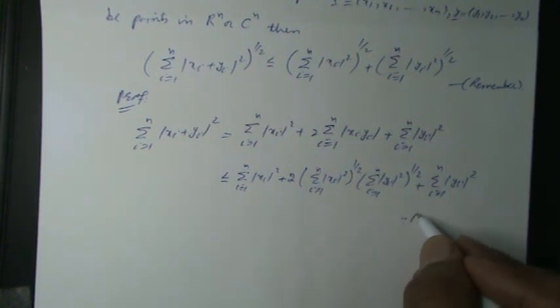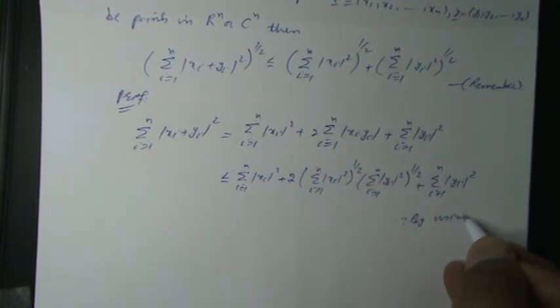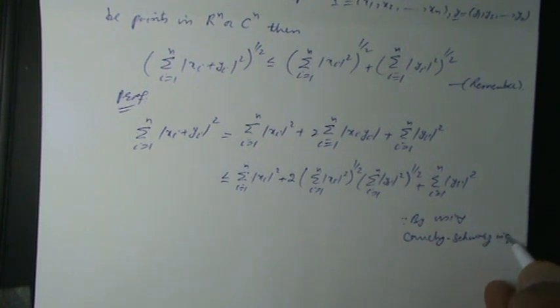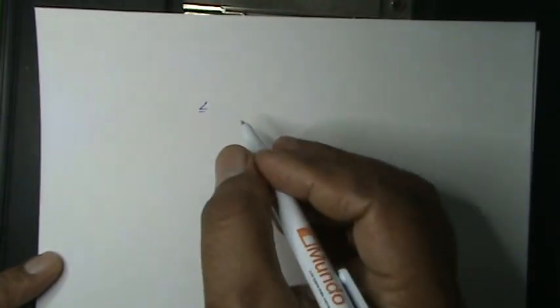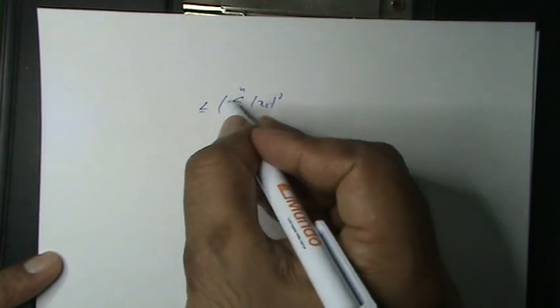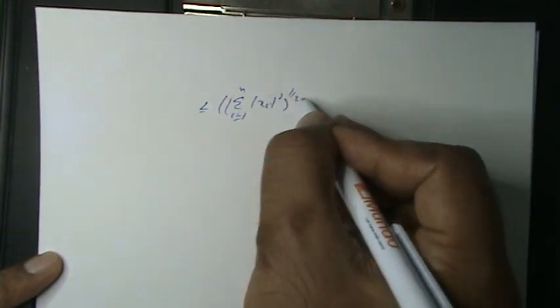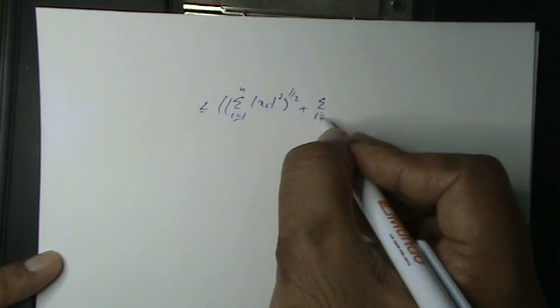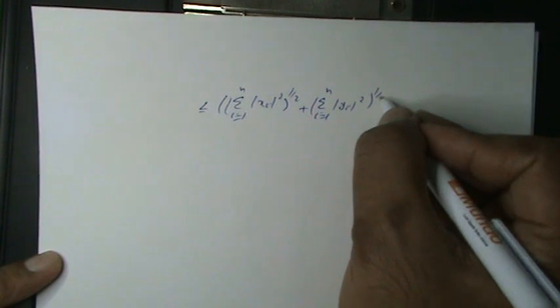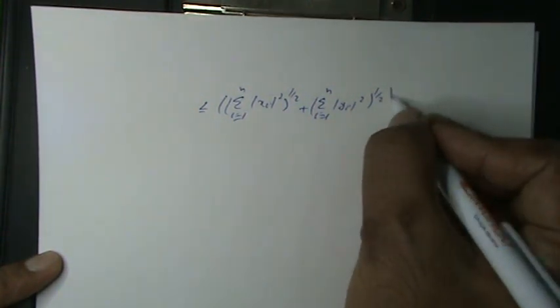Because by using the Cauchy-Schwarz inequality, this is less than or equal to: { [Σ(i=1 to N) |Xi|²]^(1/2) + [Σ(i=1 to N) |Yi|²]^(1/2) }², which is the whole expression squared.